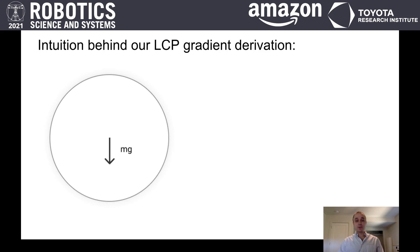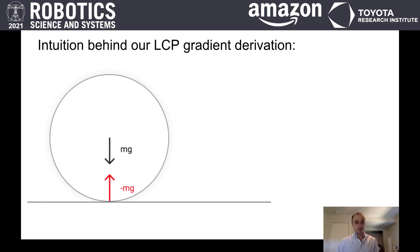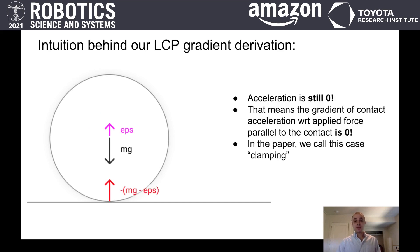Imagine we've got a ball experiencing acceleration due to gravity. Now we place a floor underneath our ball. Our physics engine's contact solver, which uses an LCP to define contact forces, will solve for a contact force between the ball and the ground — finding a contact force that exactly cancels out gravity, so the ball is perfectly resting on the floor. Now suppose we add an infinitesimally small epsilon force to our ball in the same direction as the contact force. Intuition says the ball is still going to be resting on the floor, because some infinitesimally small force is not going to be enough to overcome gravity. It turns out that's what the math says too. The contact solver's LCP will just slightly reduce the contact force by exactly the magnitude of epsilon, and the ball's acceleration will still be zero. This means the gradient of the contact acceleration with respect to perturbations in applied force parallel to the contact direction is zero.